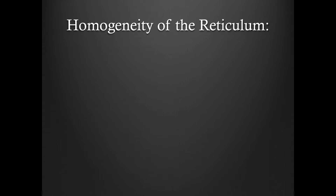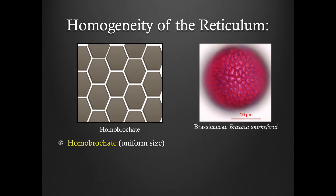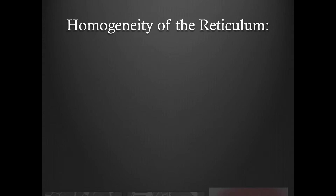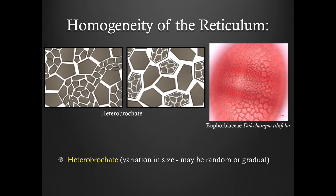Homogeneity of the reticulum: Homobrocate grains have a reticulum that is uniform in size. Heterobrocate grains have a reticulum that has a variation in size,